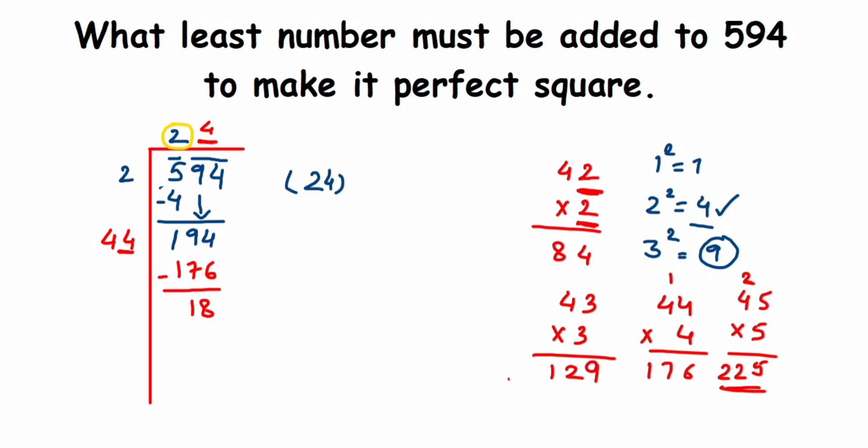What we can say from here is we got quotient 24, so 24 squared is less than 594. After 24, the next number is 25, and 25 squared will be the perfect square. So what is 25 squared? Let us write that down.